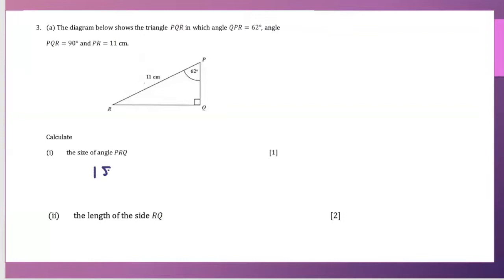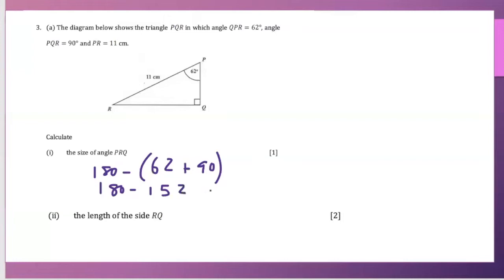Angles in a triangle add up to 180 degrees, so I'll add 62 plus 90 and subtract from 180. 62 plus 90 is 152 degrees, and 180 minus 152 gives me 28 degrees. That is the missing angle PRQ.